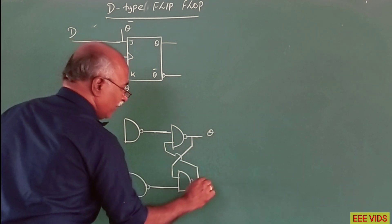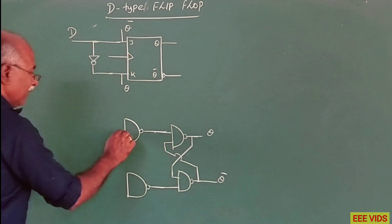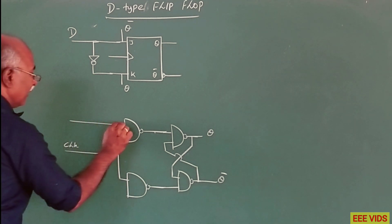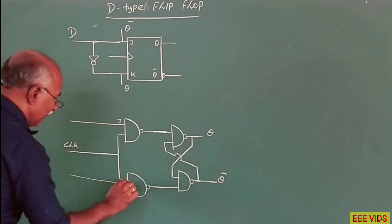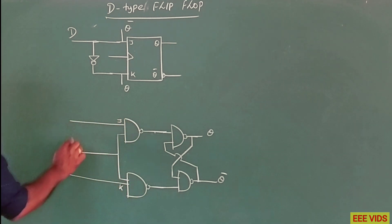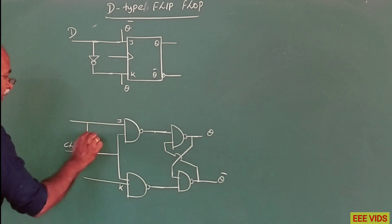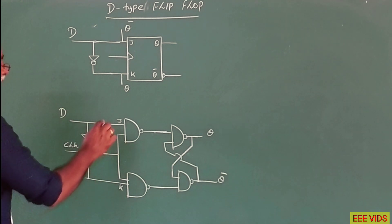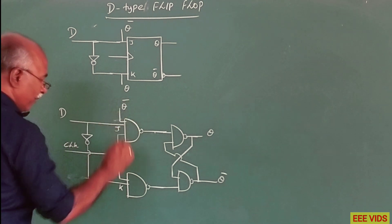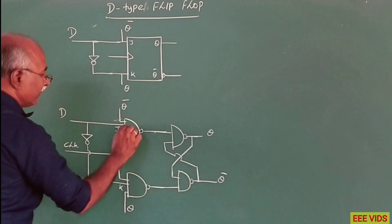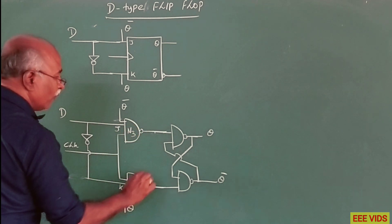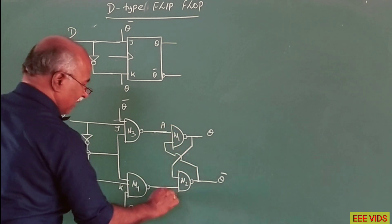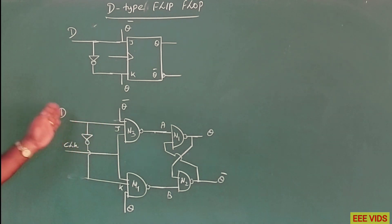In the D-type flip-flop circuit diagram, this is Q bar, clock pulse, J input, and K input. In the J-K input, one diode and one NOT gate are applied, giving us the D input. This is J input, this is Q complement, this is Q. The gates are labeled N3, N4, N1, N2. This is a large circuit. In the J-K flip-flop, the J and K inputs have a NOT gate applied, giving a single D input.